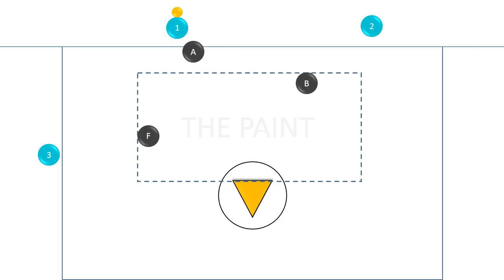So we have offense in teal, defense in dark. The gold ball above player number one is the ball carrier. Whenever you see that gold ball, that will be the ball carrier.